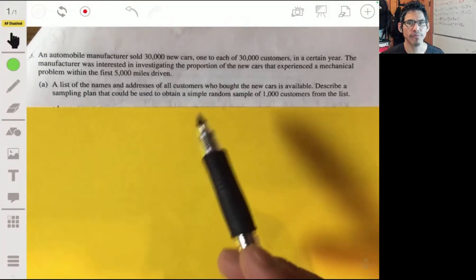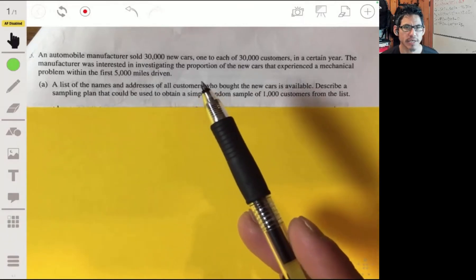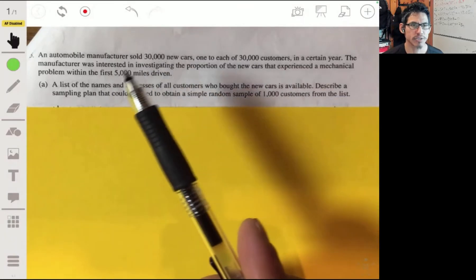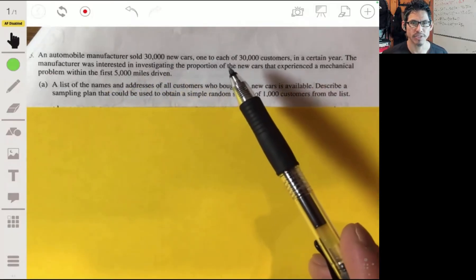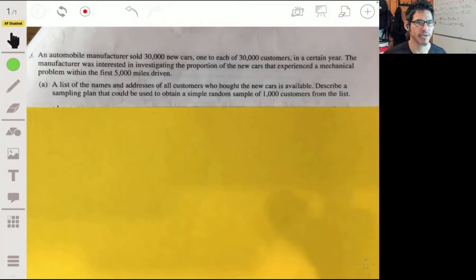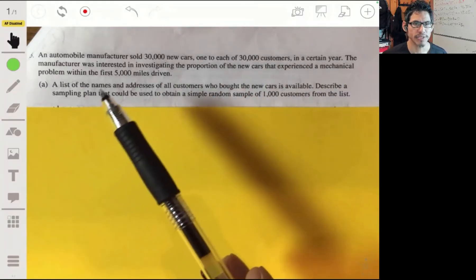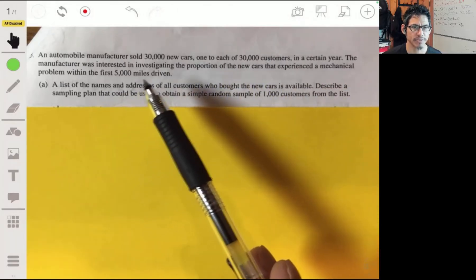Alright, so going over free response problem five from the 2017 exam. We have an automobile manufacturer that sold 30,000 new cars, one to each of 30,000 customers in a certain year. They were interested in investigating the proportion of new cars that experienced mechanical problems in the first 5,000 miles.